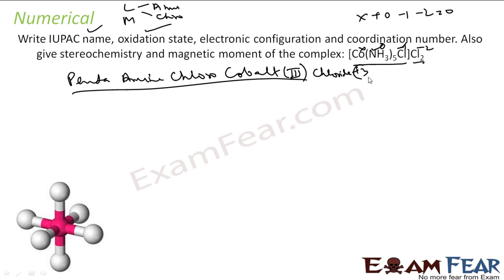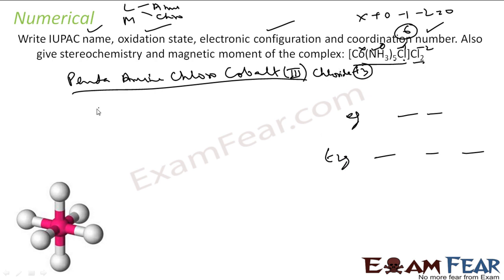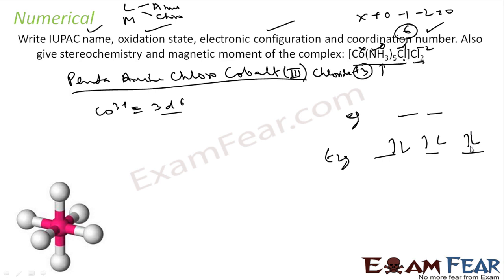Oxidation state is plus 3. For electronic configuration, coordination number is 5 + 1 = 6, so it is octahedral, with t2g and eg levels. Cobalt 3+ has electronic configuration 3d6. NH3 is a strong field ligand and Cl minus is weak, but since we have more NH3 we assume strong field. The six electrons pair up in t2g: first three go in, then the fourth, fifth, and sixth pair them. Electronic configuration: t2g6, eg0.